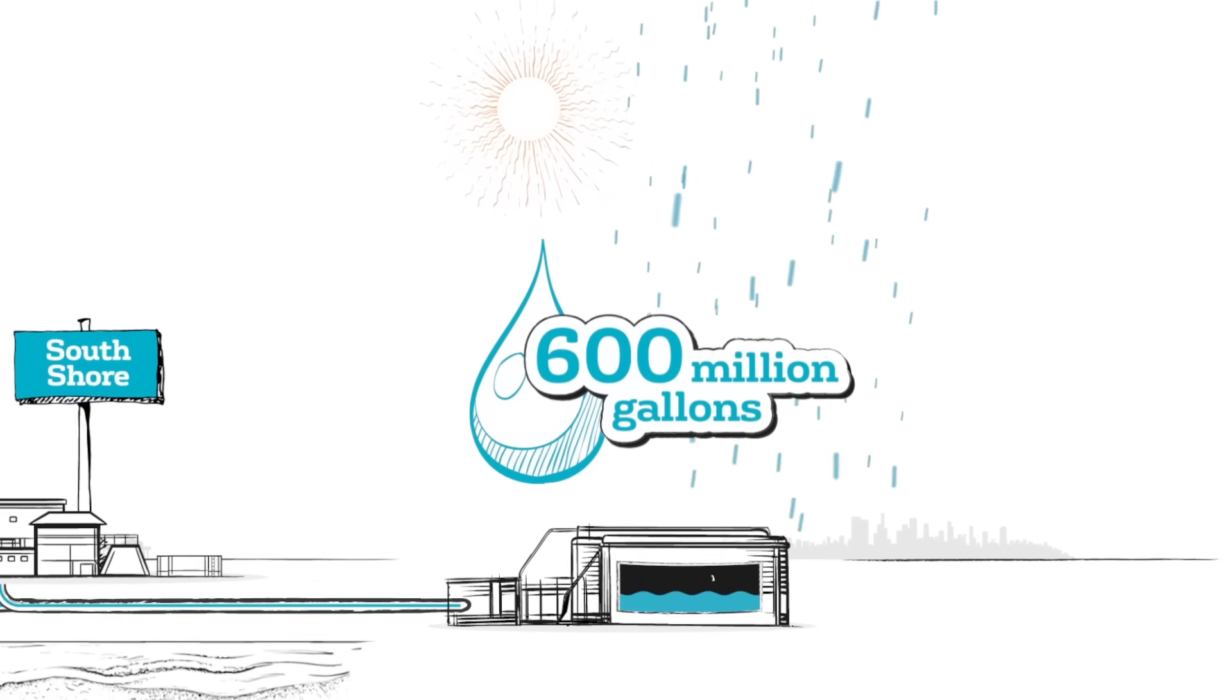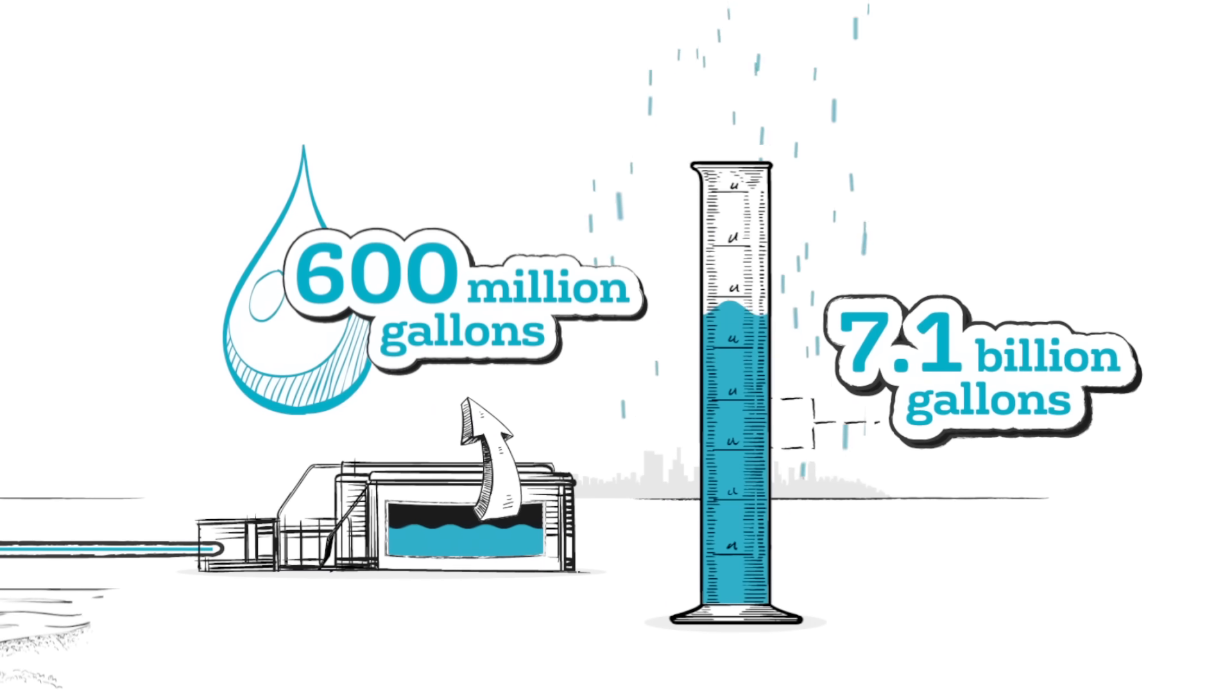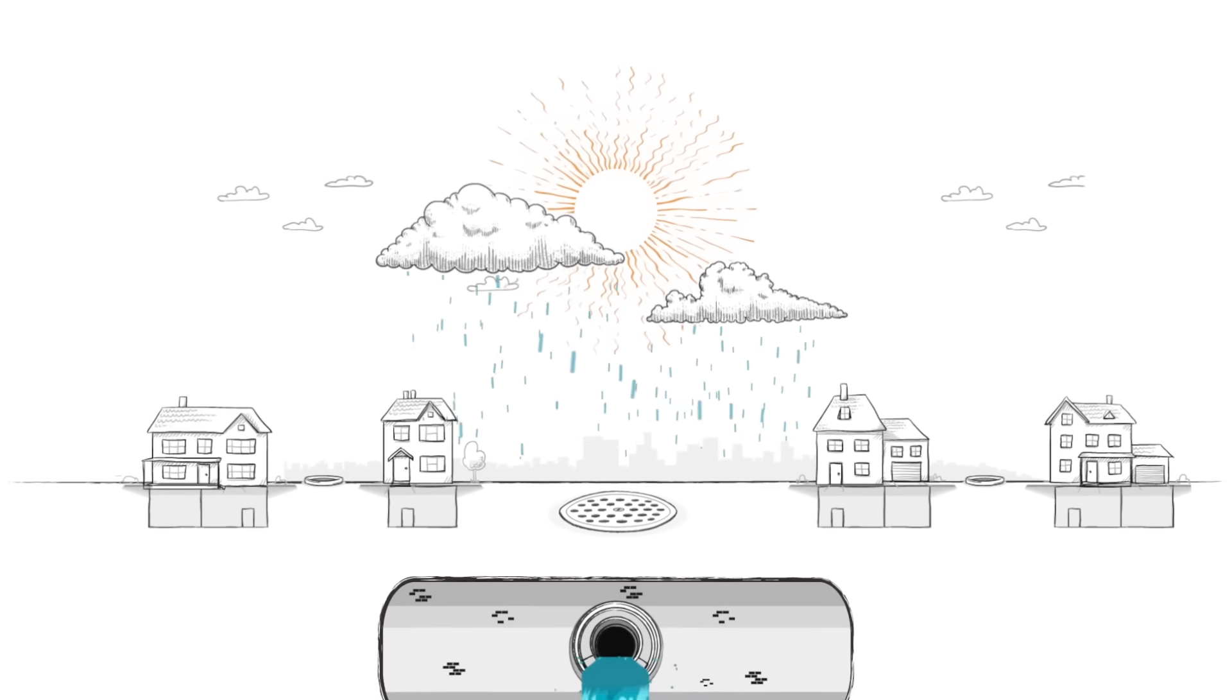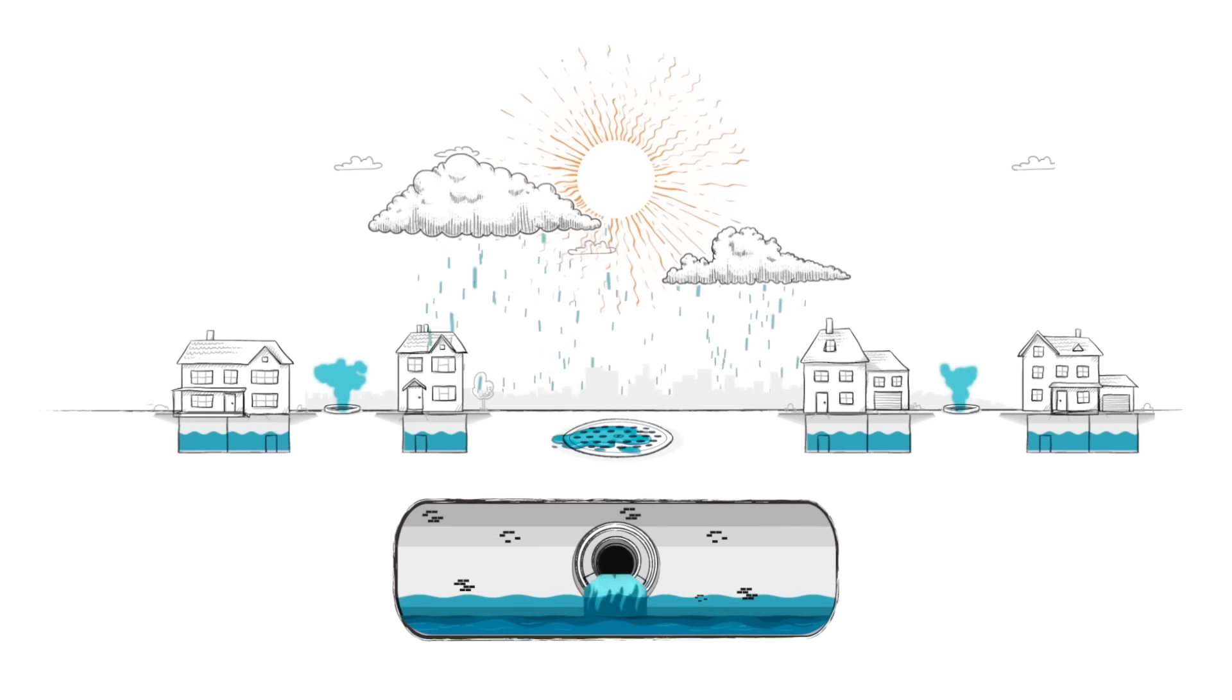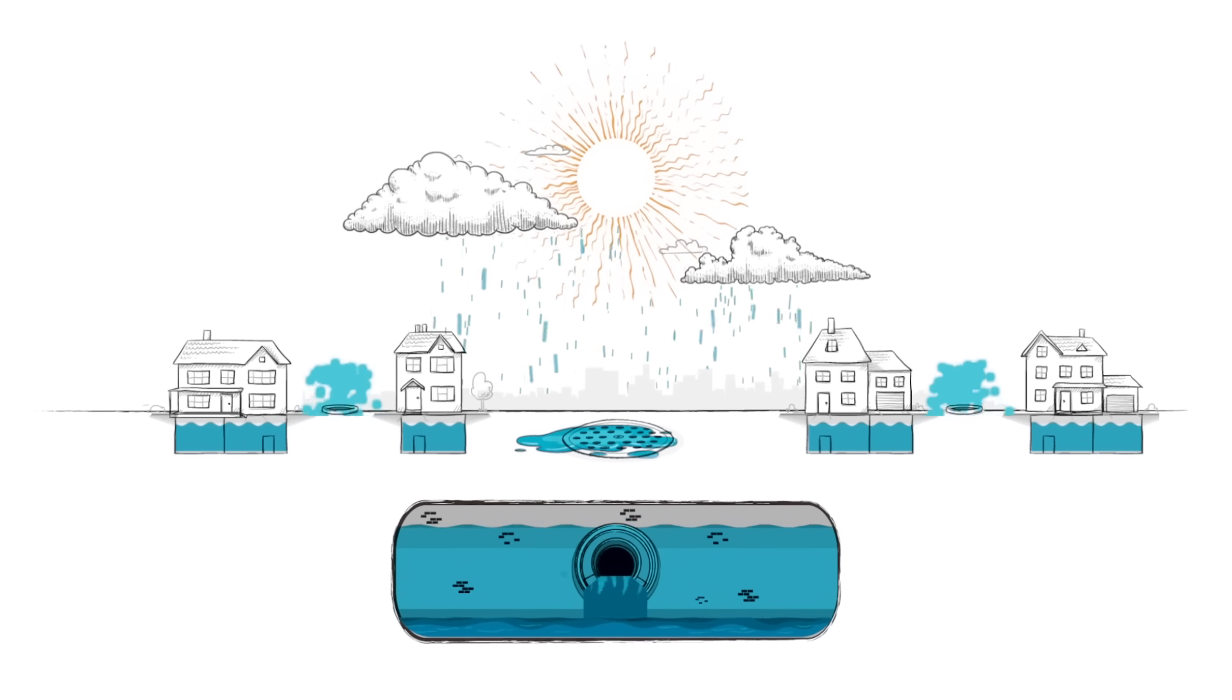Every inch of rain that falls on the service area can generate 7.1 billion gallons of water. If there's an intense rain event and more water gets into the sewers than the two plants can handle, the excess water will cause basement backups or sewer overflows if not stored somewhere.